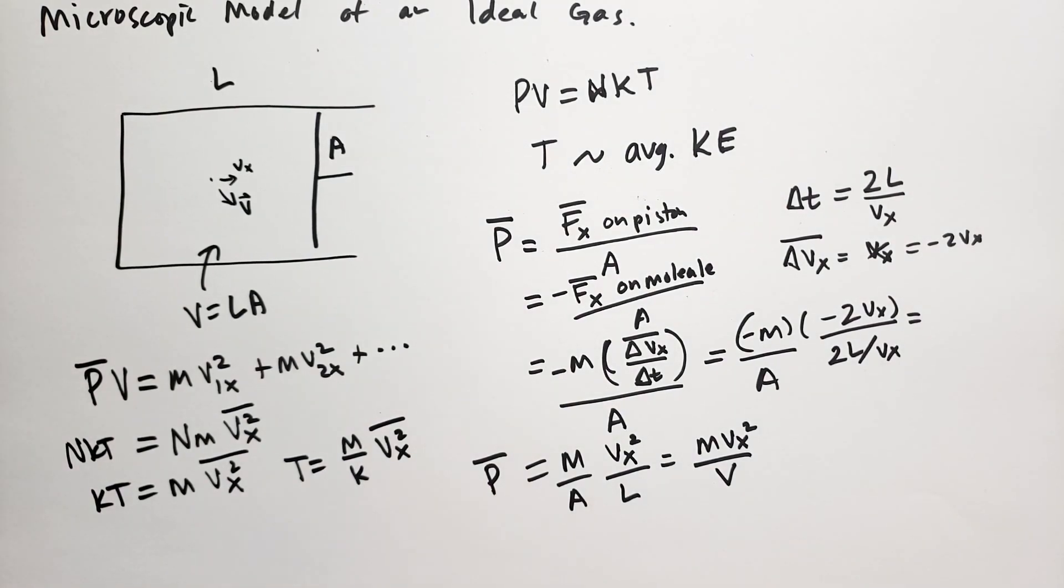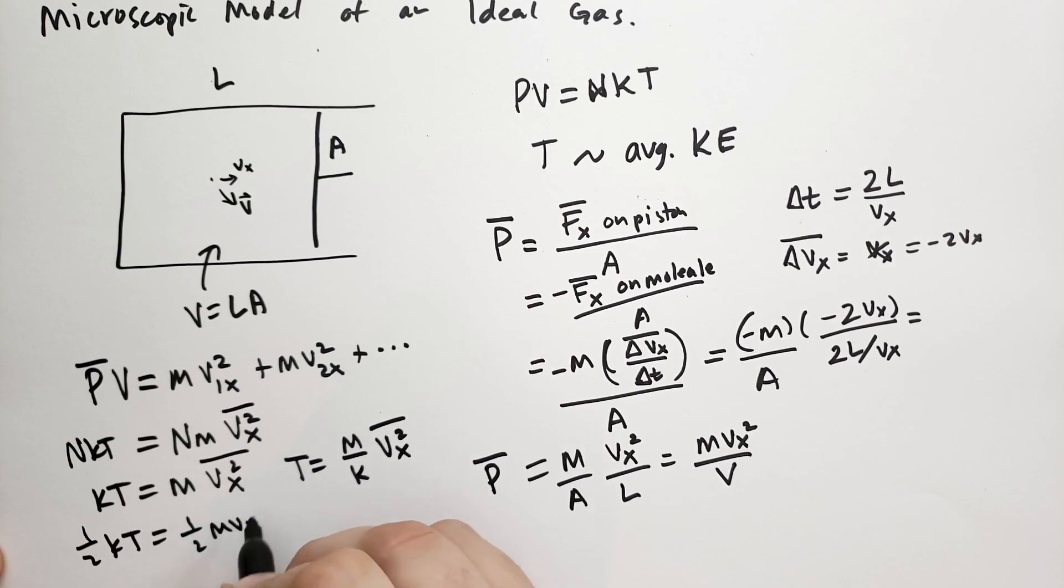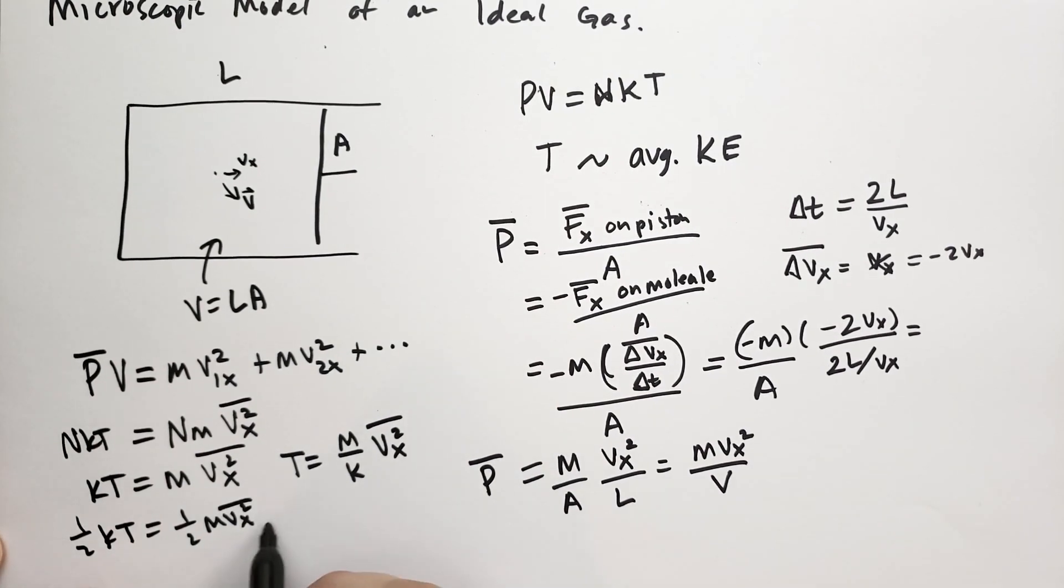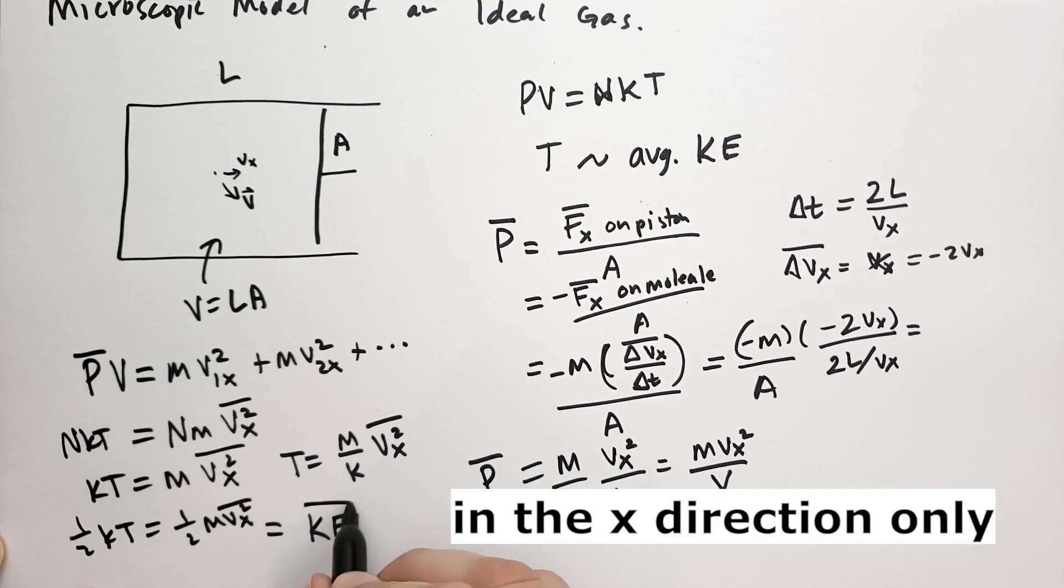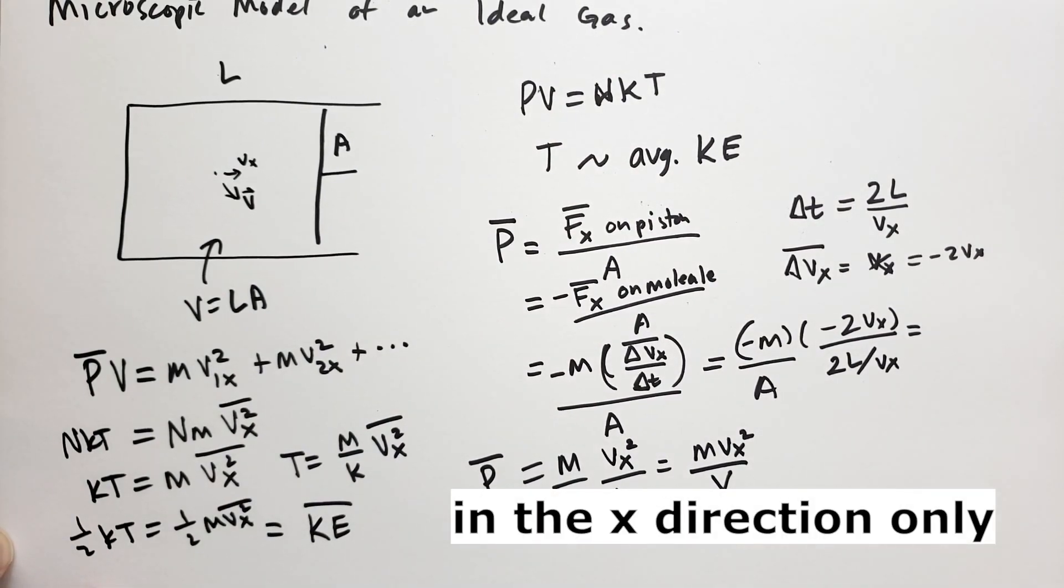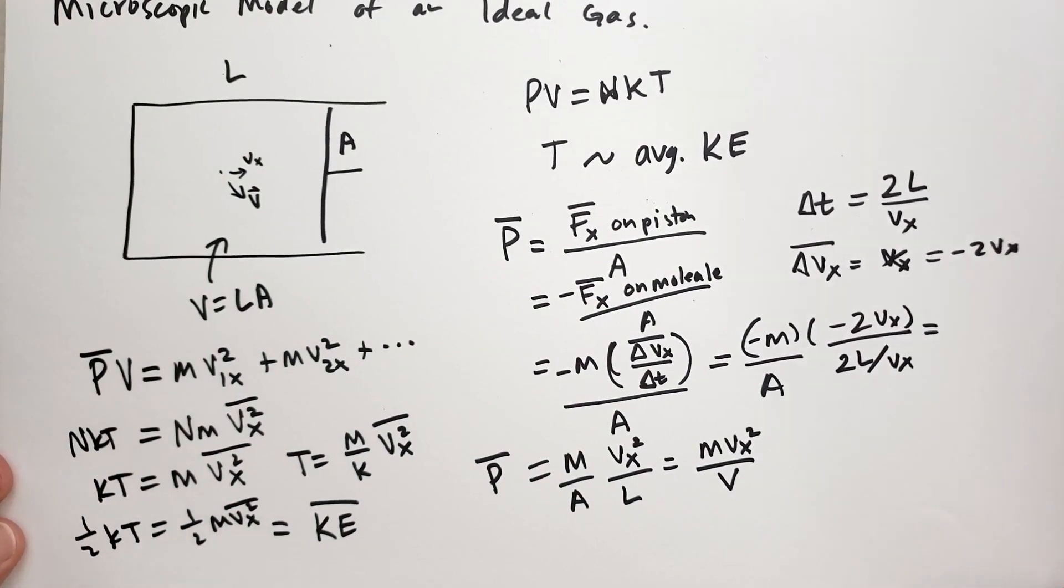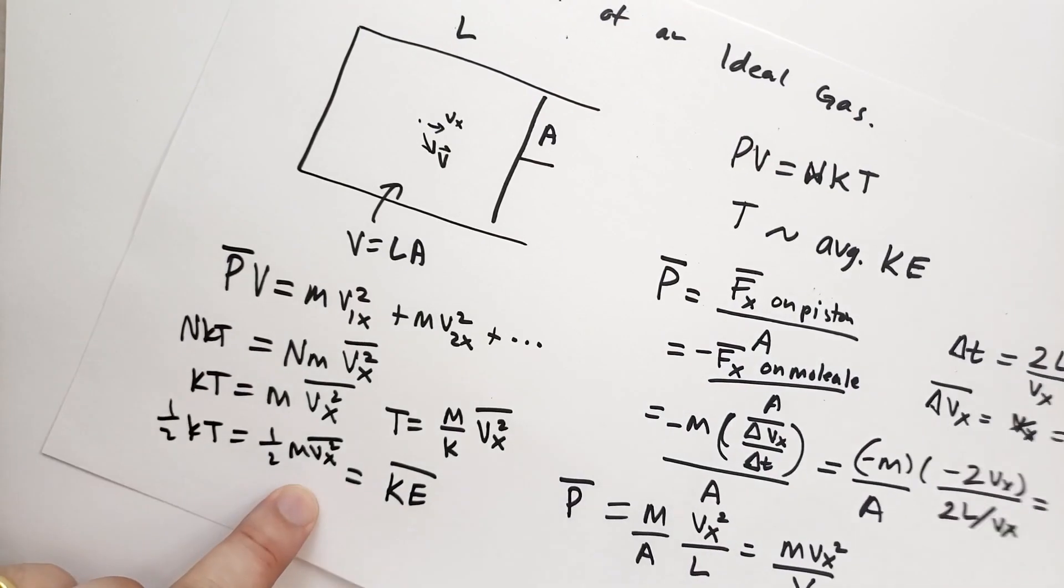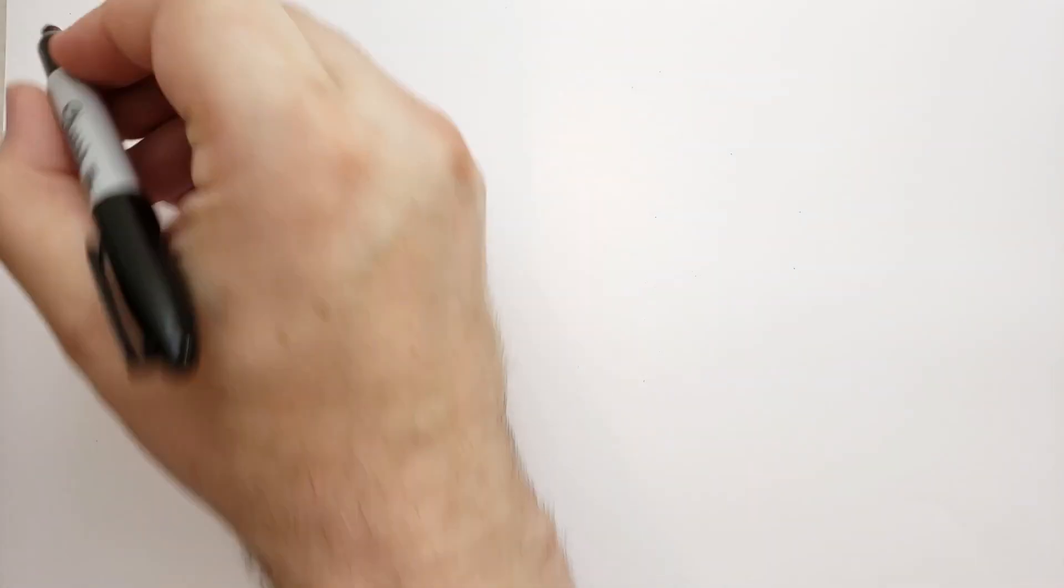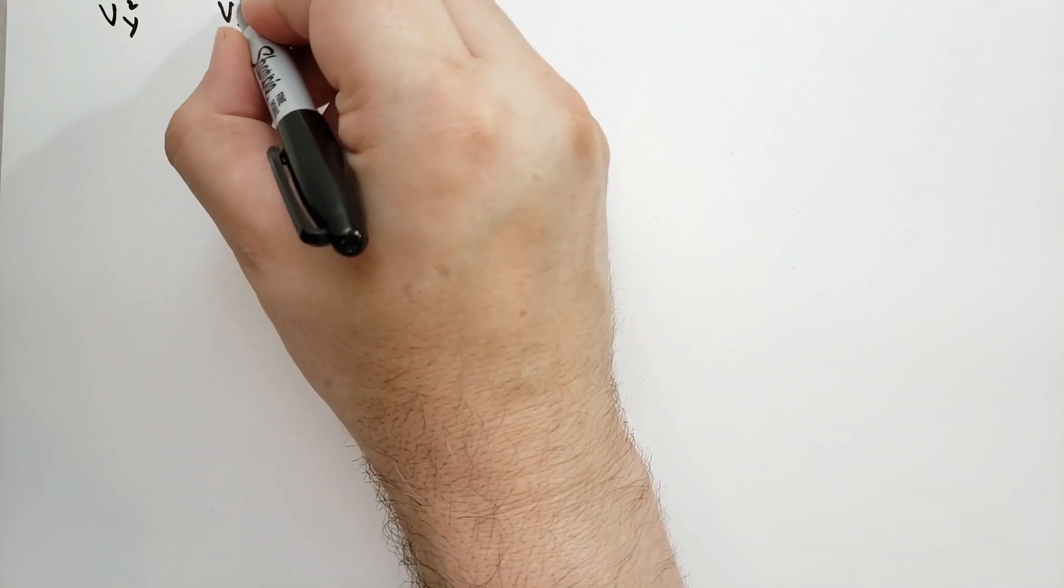And he multiplies both sides by one-half. So he has one-half KT equals one-half MVX squared average. And the reason why he does that is because that's the average kinetic energy of each particle. So that is what we get. The average kinetic energy is related to the temperature by the factor of the Boltzmann constant. This is not the entire story because, remember I said that the average velocity in the X direction is proportional to the temperature. So we have to calculate for all the other directions. So there's also a VY average, there's a VZ average because we're in three dimensions.